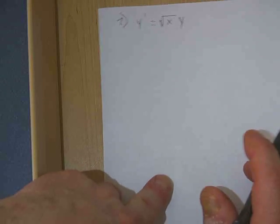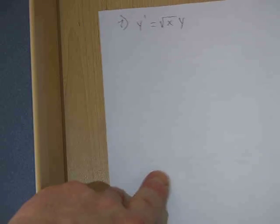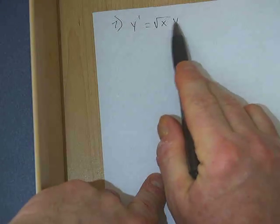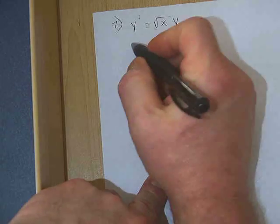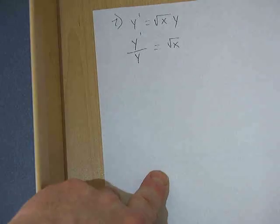The class says hi Gabby. So this is another example of solving a differential equation. The first step we need to do is collect the y's on one side and the x's on the other, so I'm going to get y prime over y equals the square root of x.